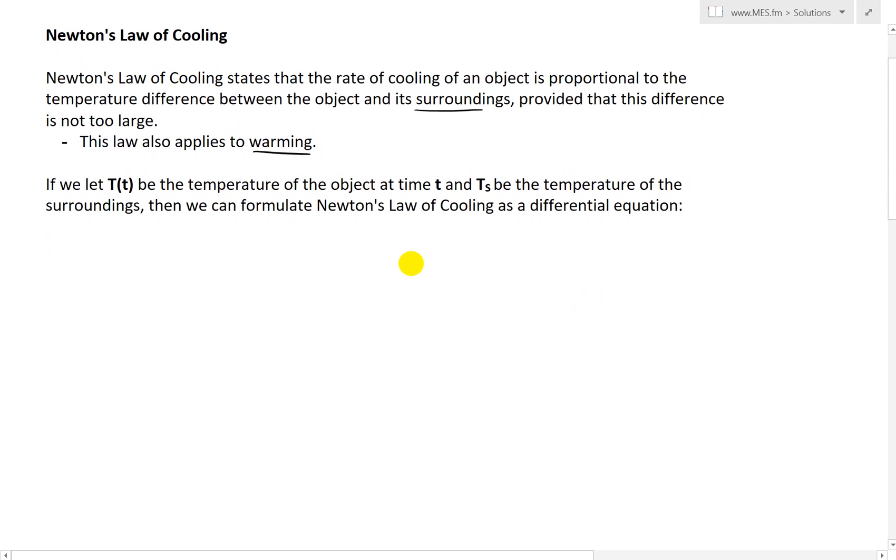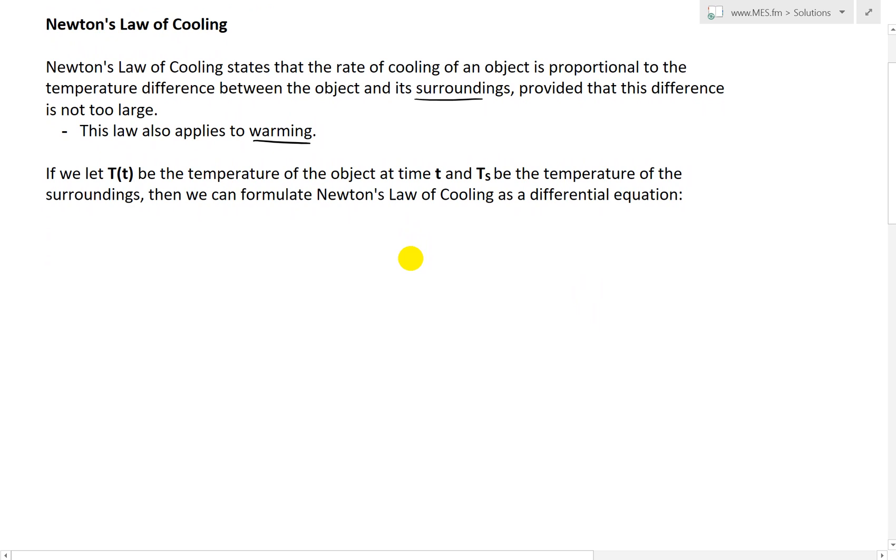If we get further into this, let capital T of t be the temperature of the object at time t, and T_s be the temperature of the surroundings, and we're going to assume it's constant. Then we can formulate Newton's Law as a differential equation.